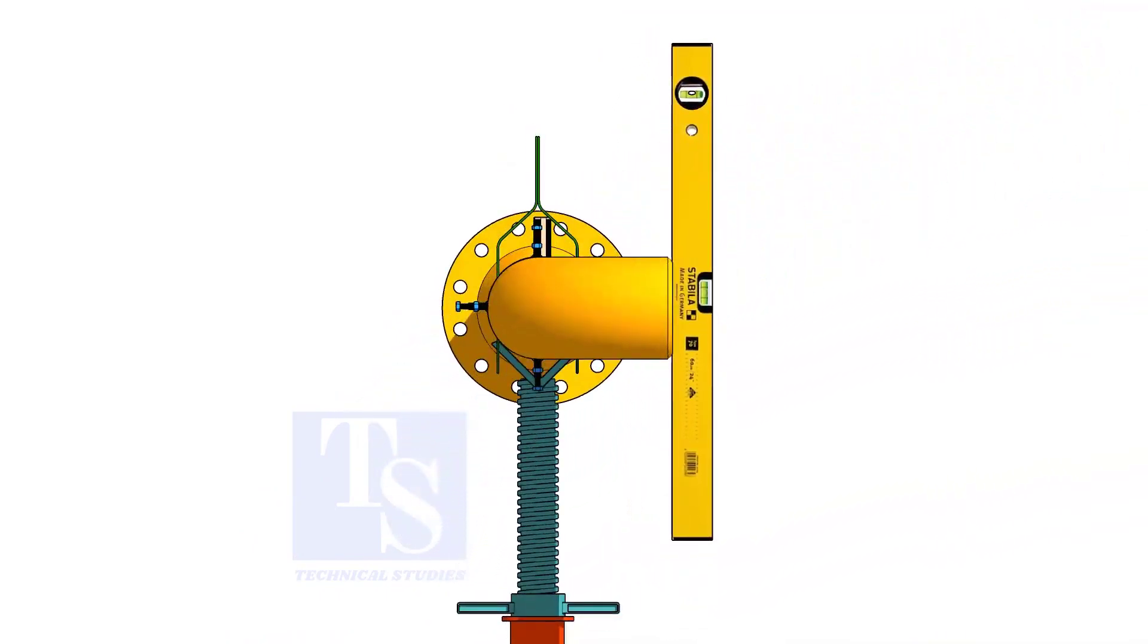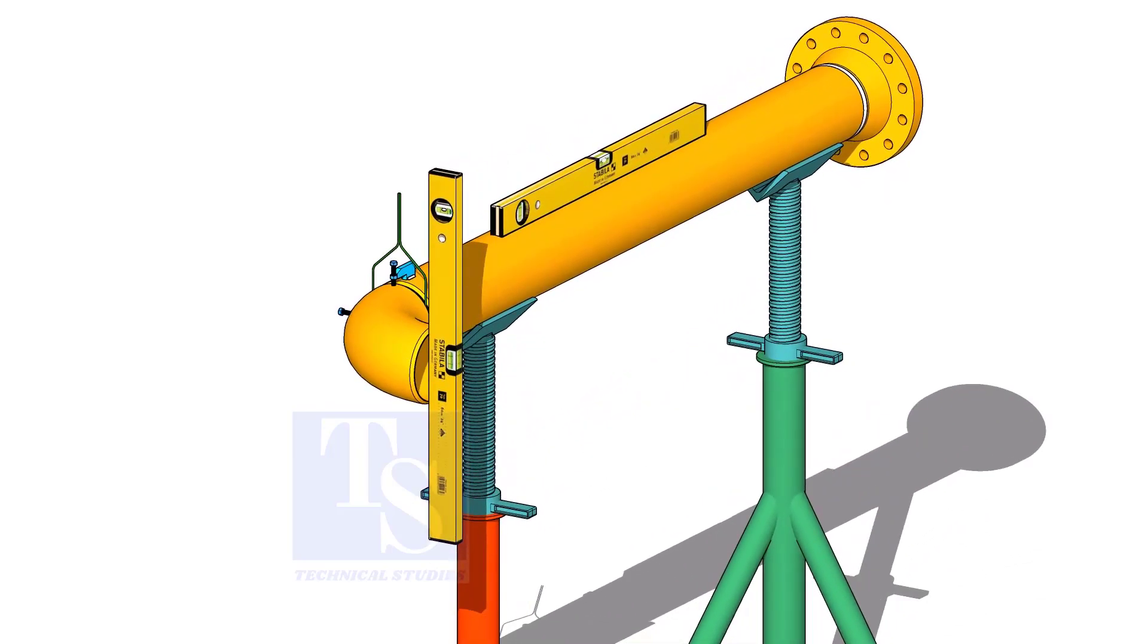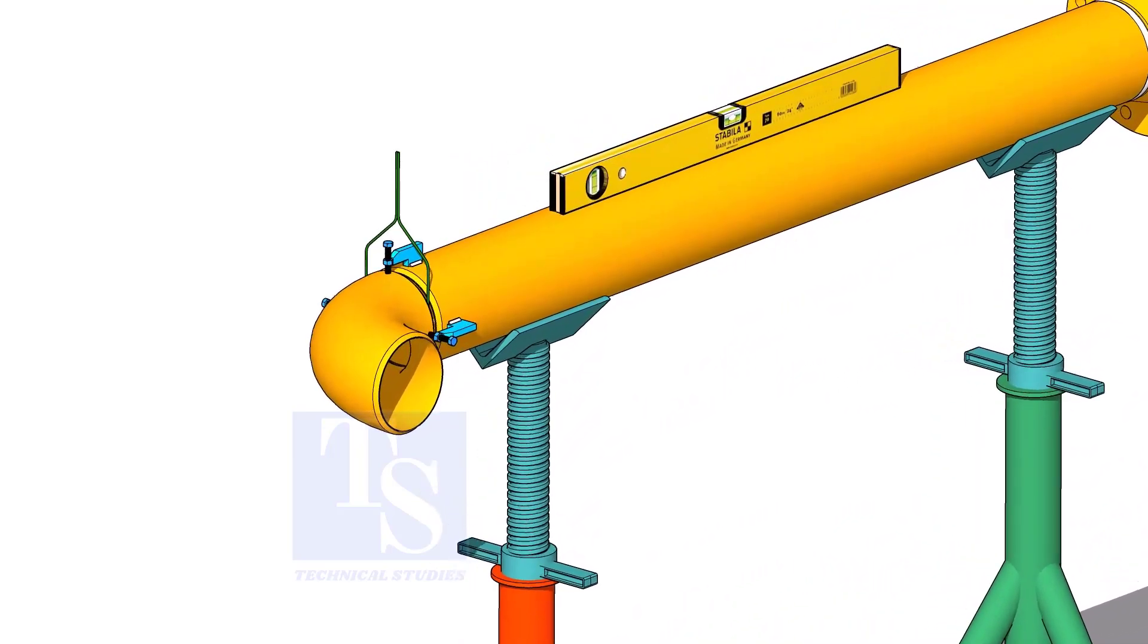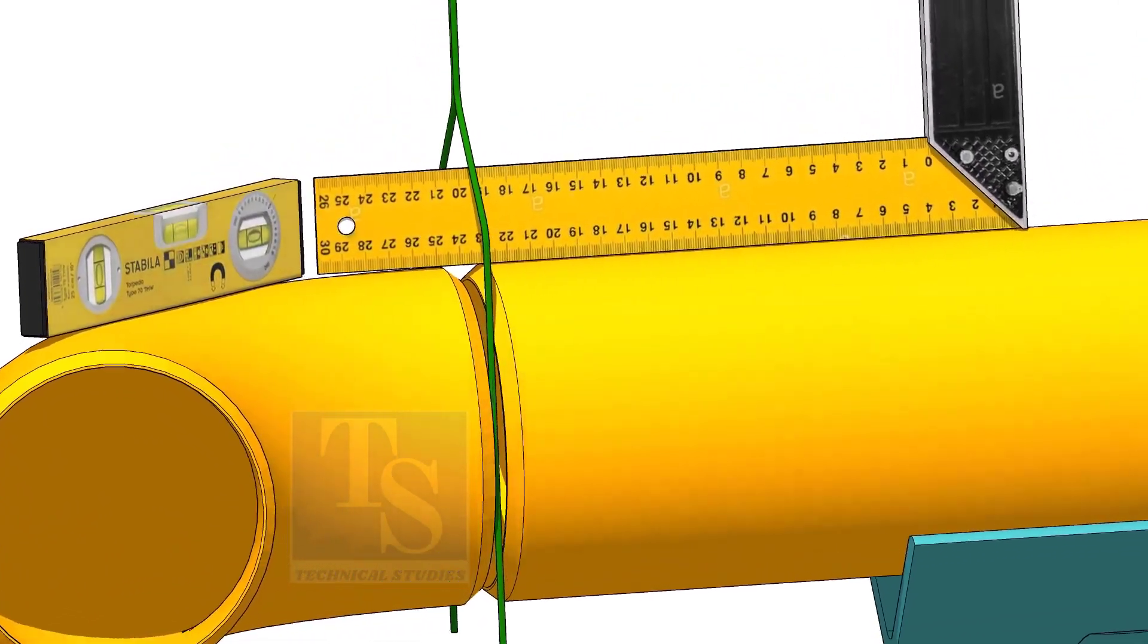Check the level of the elbow face. You can use either a level bottle or a plumb. Correct the overlap.